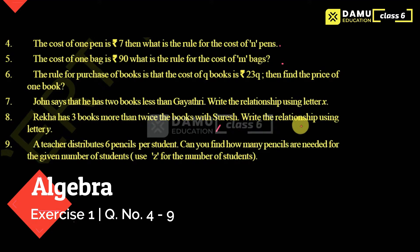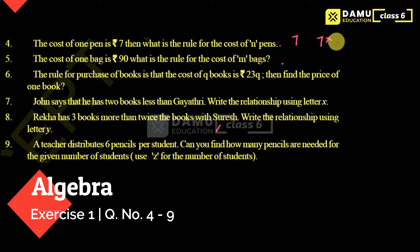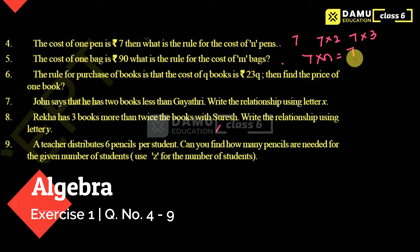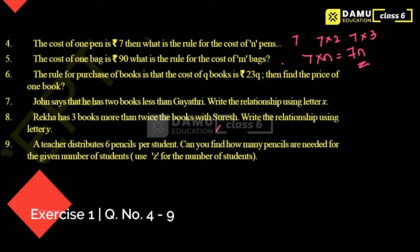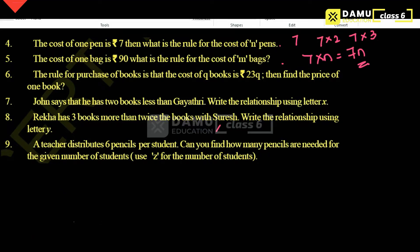Question four: the cost of one pen is 7 rupees. What is the rule for the cost of n pens? One pen costs 7 rupees, two pens cost 7×2, three pens cost 7×3, so n pens cost 7×n, that is 7n. That is the answer for question four — you can also write it in formula format as 7×n.